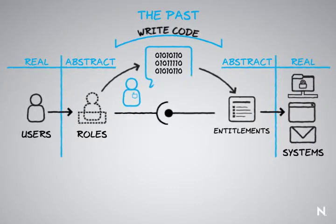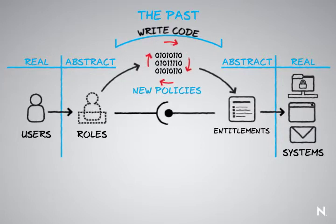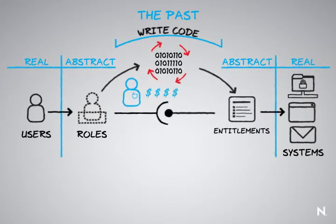If the code that was being written was only done once and never going to change, not such a big deal. The problem is that this code has a life cycle of its own. As things change within the company—new policies, new regulations, whatever it happens to be—someone has to continuously go through and modify that code.